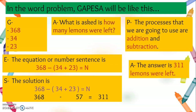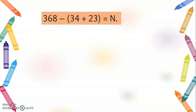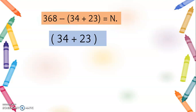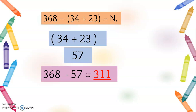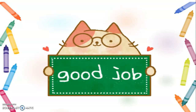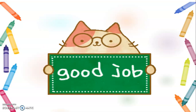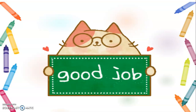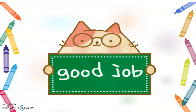The answer is 311 lemons were left. Again: 368 − (34 + 23) = N. So 34 plus 23 equals 57, and 368 minus 57 equals 311. And 311 lemons were left. Great job, my dear Grade 2! Now we can already perform order of operations involving addition and subtraction. Great job!